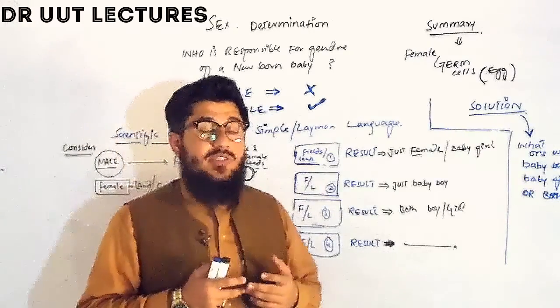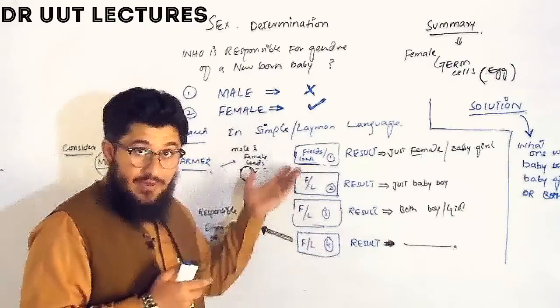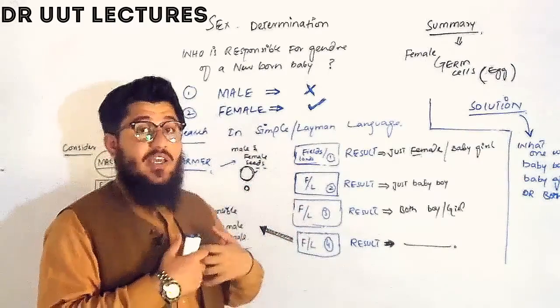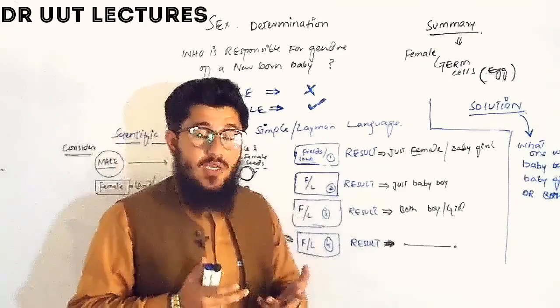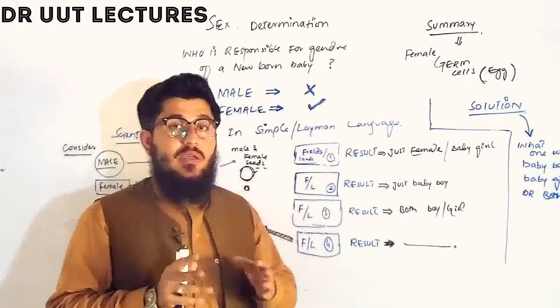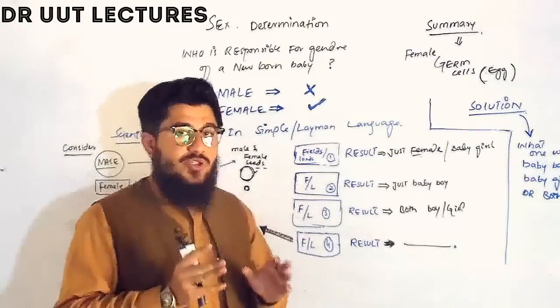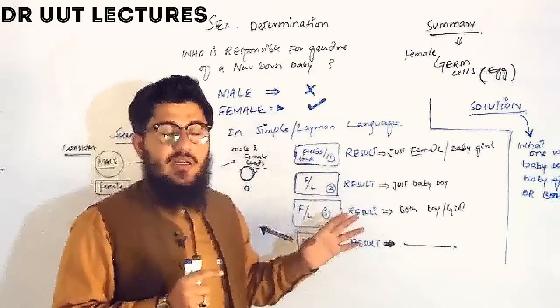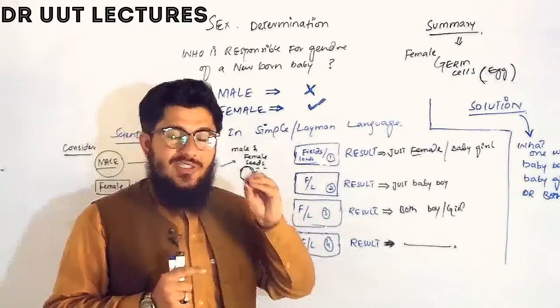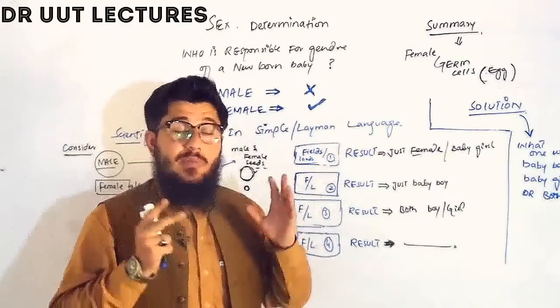And the very next solution is that a person can have different fields or different lanes, means a person can marry one, two, three, four wives. It is allowed for a male to marry more than one. And the very next solution for this particular type of illness of brain is that one should just keep passions and pray to Almighty Allah.